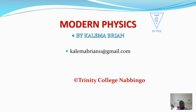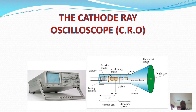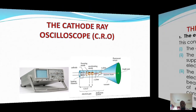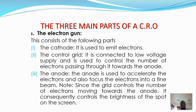Hello students, we are back for a second lesson on modern physics. We will look at a cathode ray oscilloscope (CRO). We have two pictures: the actual CRO which we normally use in hospitals, and the second diagram which we use in physics for study purposes. The CRO has several parts which include the cathode, anode, fluorescent screen, electron beam, and the heating filament.